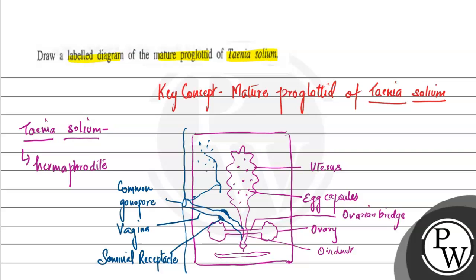This gonopore is common to both vas deferens and vagina. So this is the vas deferens, testes, and vas deferens.